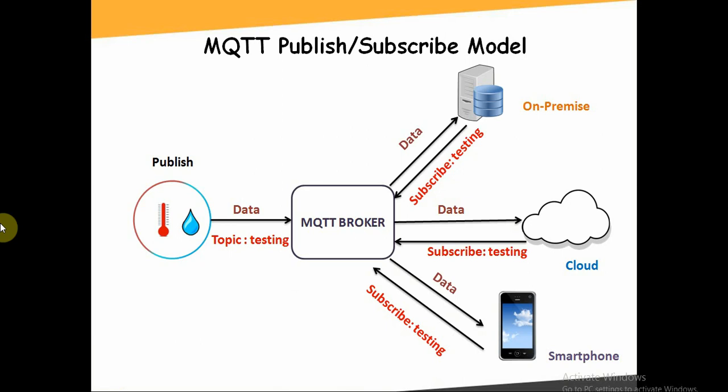MQTT is a publish-subscribe protocol and a very lightweight messaging protocol. It is one of the most popular and widely used protocols in the IoT industry. The idea of MQTT involves three components: a broker, a publisher, and a subscriber.